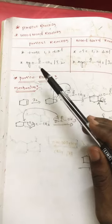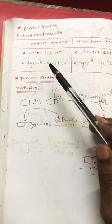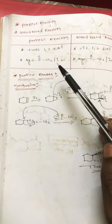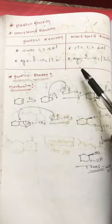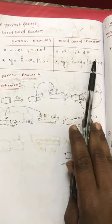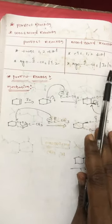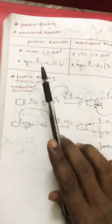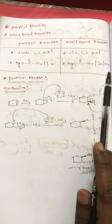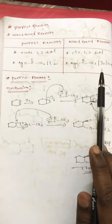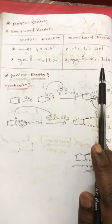Here we can see that the Woodward reaction uses silver oxide, a carbonyl compound, iodine, and water. In the Prevost reaction, we are not using water, whereas in the Woodward reaction we are using water.